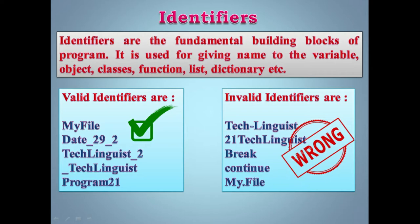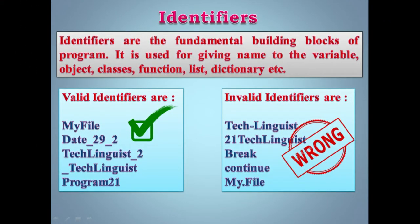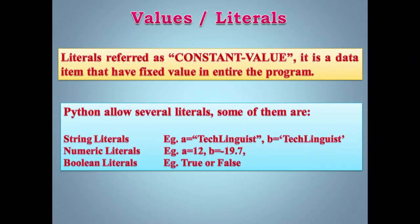In identifiers, the first letter should be a character and underscore is also counted as a character. Invalid identifiers include things like 'my.file' which uses a dot, or names starting with numbers. Identifiers must follow these rules for correct naming in Python.